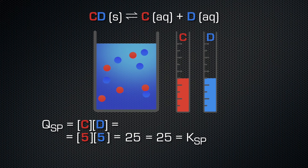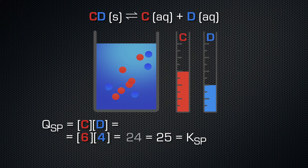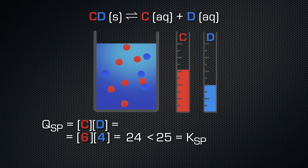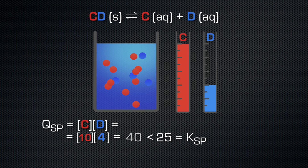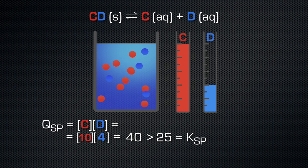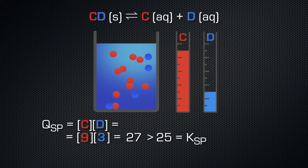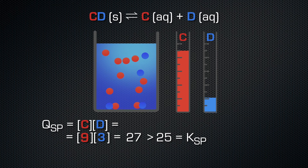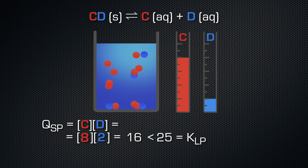What happens when we remove one particle D and add one particle C? We get a new reaction quotient of 6 × 4 = 24, which is smaller than the solubility product, so there is no precipitate. When we then add 4 extra particles C, we have 10 particles C in solution. The reaction quotient is now 10 × 4 = 40, which is higher than the solubility product, so something has to precipitate. If one particle CD precipitates, we have 9 particles C and 3 particles D; the reaction quotient is 27, still higher than the solubility product. If another CD precipitates, the reaction quotient falls below the solubility product. We see that there are always 1 to 2 solid particles CD present in this solution.